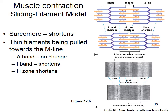Muscles contract by the sliding filament model. When sarcomeres shorten, the H zone and I band shorten, and Z discs get closer together as myosin pulls actin across it. This happens end over end — as sarcomeres shorten, the entire cell shortens, and then the entire muscle shortens. Sarcomeres are the smallest contractile unit of the cell.